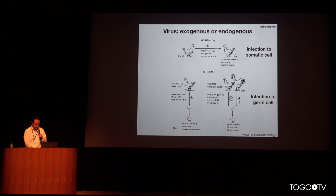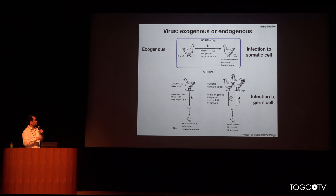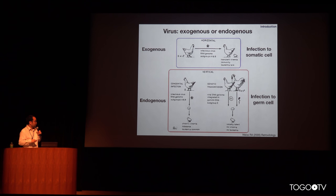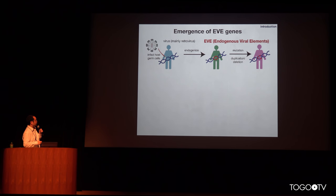Let me start with some basics. As you all know, viruses infect individual to individual, and usually a virus does not get inherited by offspring — it just infects individuals. However, in very rare cases, if a virus infects germline cells, such viral elements can be inherited by offspring without any new infections. Such events are actually quite rare, but on an evolutionary timescale, they can happen quite often.